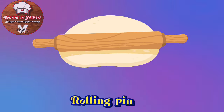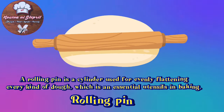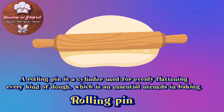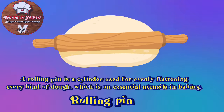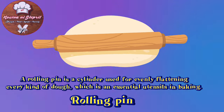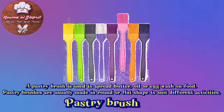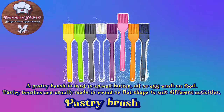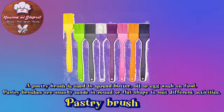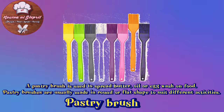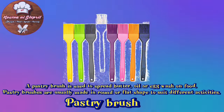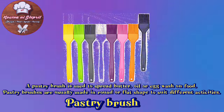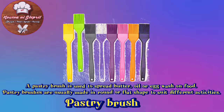Rolling Pin: A rolling pin is a cylinder used for evenly flattening every kind of dough, which is an essential utensil in baking. Pastry Brush: A pastry brush is used to spread butter, oil, or egg wash on food. Pastry brushes are usually made in round or flat shape to suit different activities.